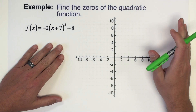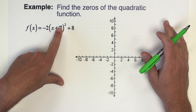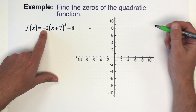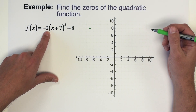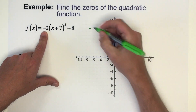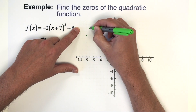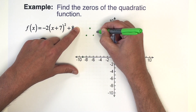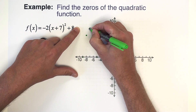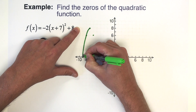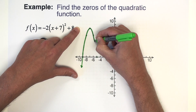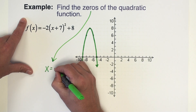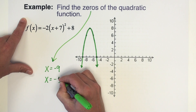The next one has the same directions — we just want to find the zeros of this function. It has a vertex of (-7, 8), so we plot negative seven, up eight. It's going to open down with the negative and be stretched by a factor of two. Going one out we go to two, and two out we square to four then double to eight. We've already hit the x-axis, so our zeros are x equals negative 9 and x equals negative 5.